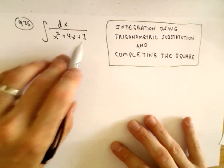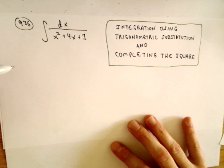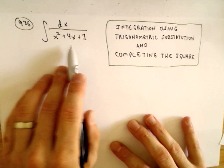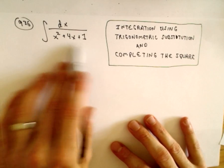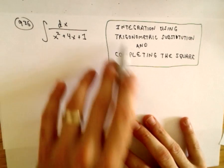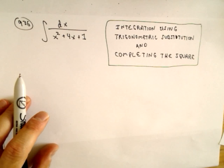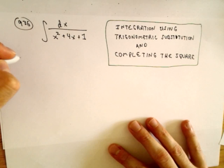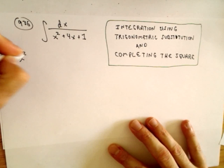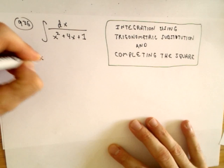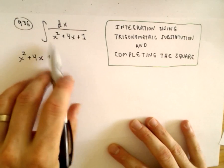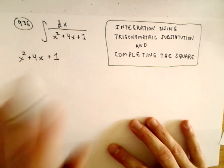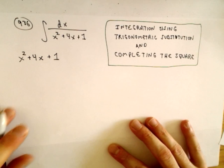We've got this x squared plus 4x plus 1 in the denominator. It's also worth pointing out that if this was an irreducible quadratic in the denominator — if it didn't factor — you would want to use this technique for sure. Because if you just tried to do a partial fractions decomposition, you would just see that it doesn't really get you anywhere. But again, to reiterate, this one does factor; you could use partial fractions. I'm going to use completing the square.